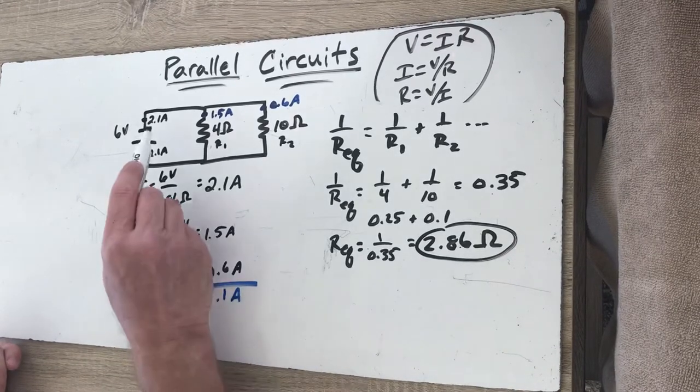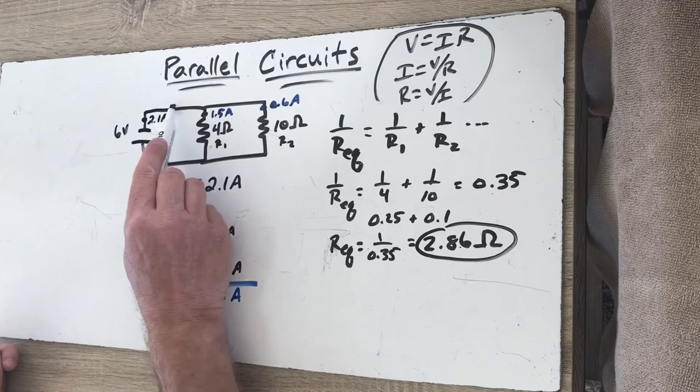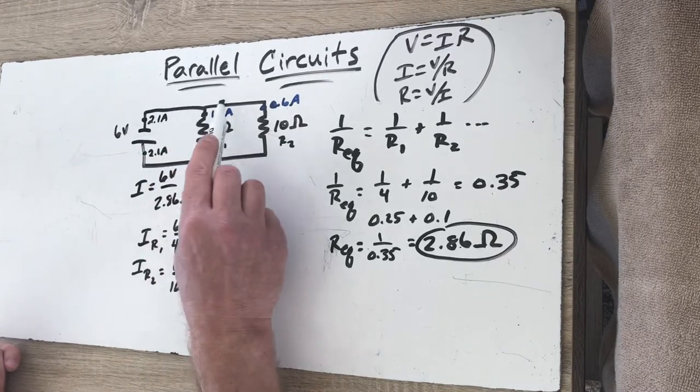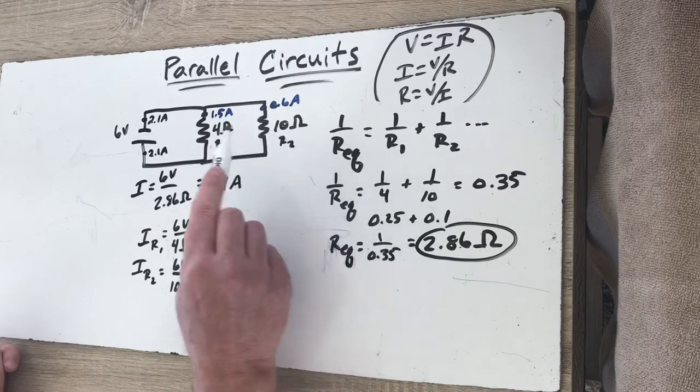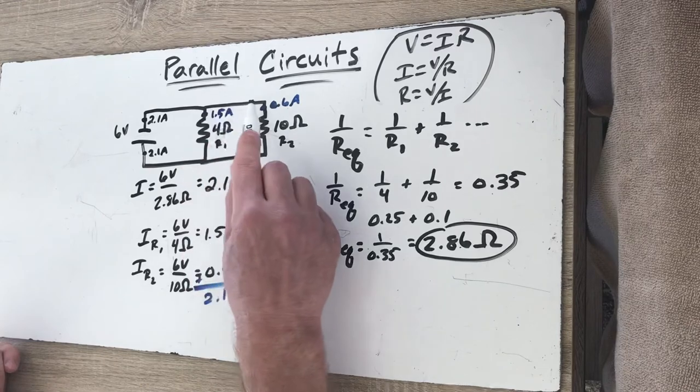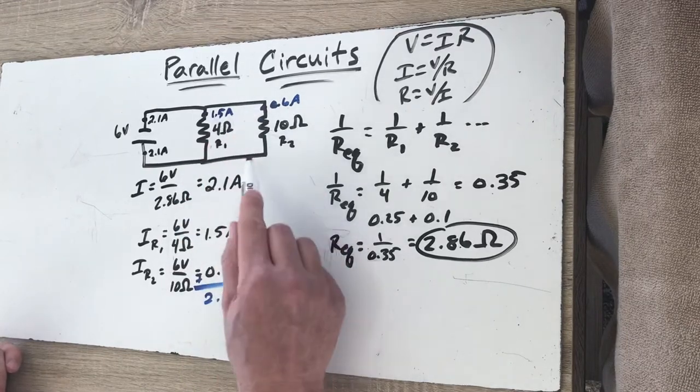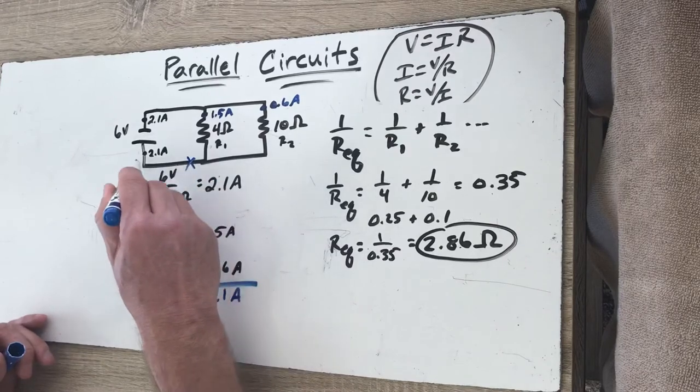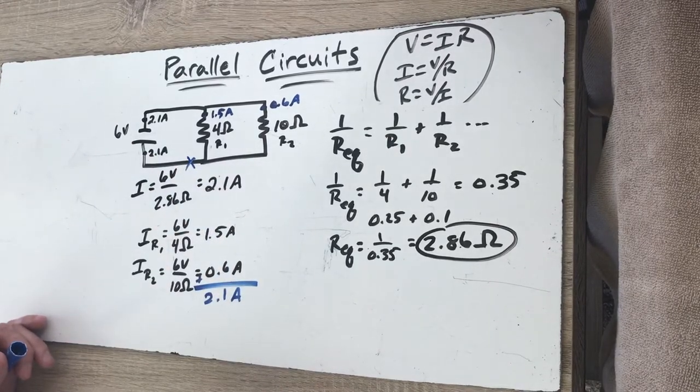So basically 2.1 amps of current comes out and then 1.5 amps flows through this pathway, only 0.6 amps flows through this pathway. It's all based on what's allowed. It's like having a really big highway where lots of traffic can flow and having a really small bottleneck highway that not much traffic can flow. But then the traffic comes back together and at this point it's 2.1 amps again, that's entering the other end of the battery.